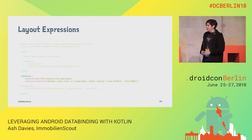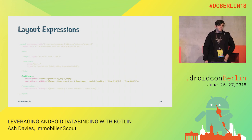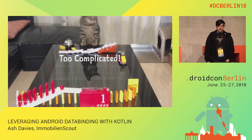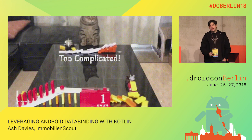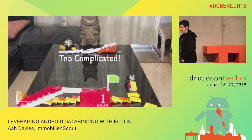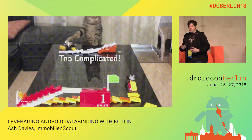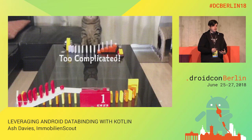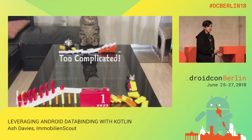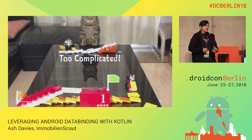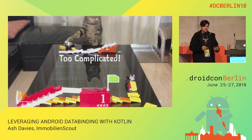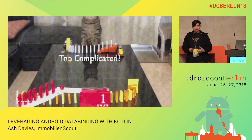You can already see what's going wrong here — it's too complicated. We're polluting our layout with business logic. It's not very easily testable, and it's really putting people off. It's often one of the problems I hear from people about wanting to use data binding, because they're worried about having complex business logic in their layouts.